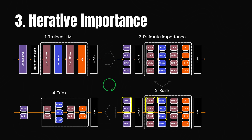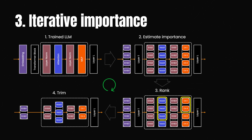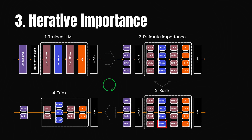Once the important parts are identified, pruning begins. For neuron and head pruning, we focus on multi-head attention and multi-layer perceptron layers, while embedding channel pruning involves all three components. When an attention head is removed, the residual information from that head is added back to the remaining heads, ensuring important information isn't lost and performance remains unaffected.